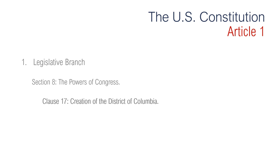Last but not least in this section is Clause 18 — the elastic clause. This clause, also called the necessary and proper clause, grants no specific powers, and thus it can be stretched to fit different circumstances. It has allowed Congress to adapt the government to changing needs and times.